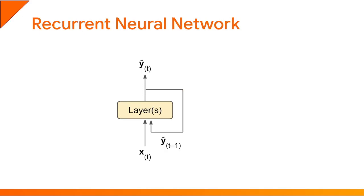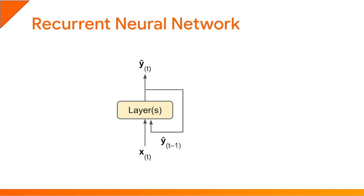In a regular feedforward neural network, the inputs X go through one or more layers and we get the prediction Ŷ. The signal only flows in one direction, from inputs to outputs. In contrast, the outputs of a recurrent neural network get fed back to the network — hence the name recurrent. More precisely, at each timestep the network gets both the inputs from the current timestep t and the outputs from the previous timestep t-1. With this architecture, instead of feeding the network a single input, we can feed it a sequence of inputs of any length, one input at a time. This is why RNNs are so popular for handling sequential data, including text, which is just a sequence of words.